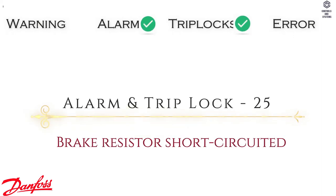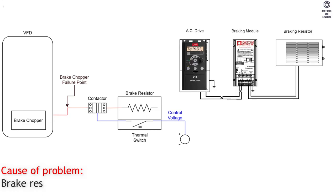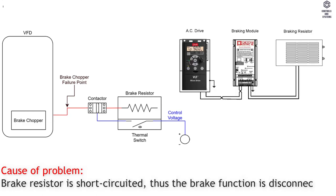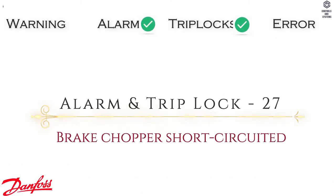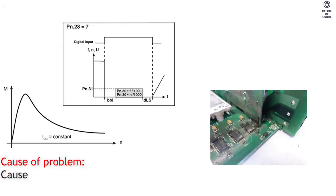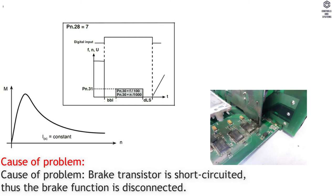Alarm and Trip Lock 25: Brake Resistor Short Circuited. Cause of Problem — brake resistor is short circuited, thus the brake function is disconnected. Alarm and Trip Lock 27: Brake Chopper Short Circuited. Cause of Problem — brake transistor is short circuited, thus the brake function is disconnected.